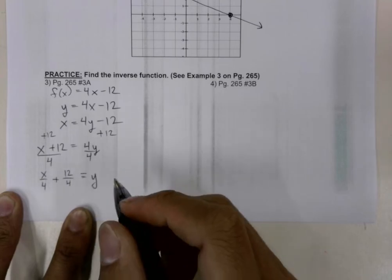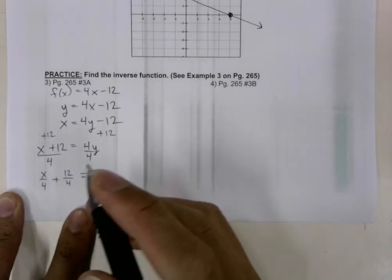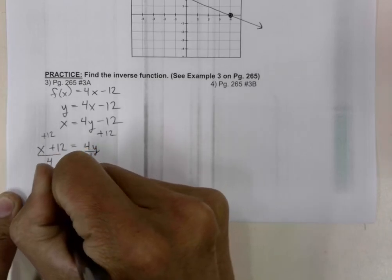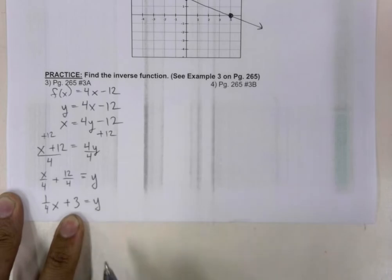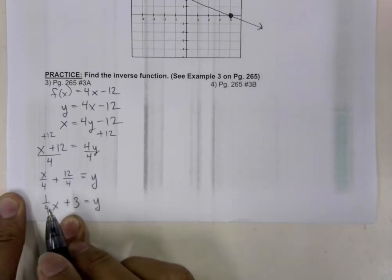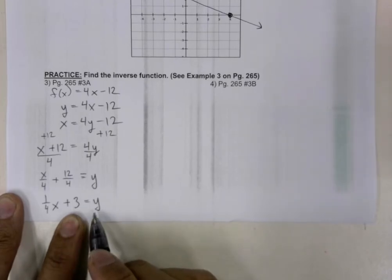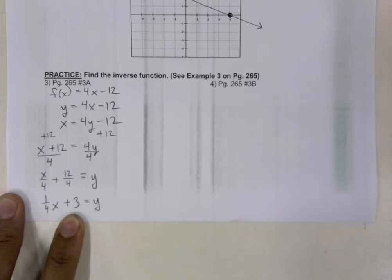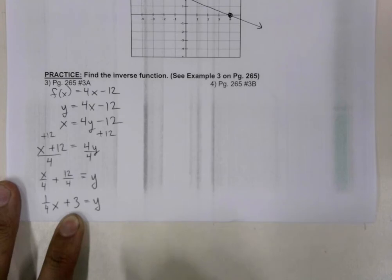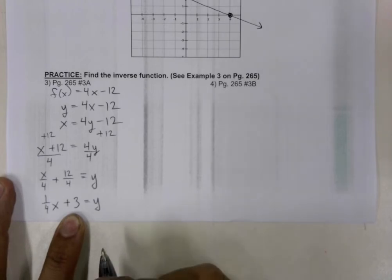Let's go ahead and rewrite this. Instead of saying x over 4, I'm going to use 1 over 4 times x plus 3 is equal to y. And now that we have solved for y, the last step is we are going to replace our y with f to the power of negative 1 x, or the inverse of x.